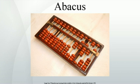The Salamis tablet is a slab of white marble 149 cm long, 75 cm wide, and 4.5 cm thick, on which are five groups of markings. In the center of the tablet is a set of five parallel lines equally divided by a vertical line, capped with a semicircle at the intersection of the bottom-most horizontal line and the single vertical line. Below these lines is a wide space with a horizontal crack dividing it. Below this crack is another group of eleven parallel lines, again divided into two sections by a perpendicular line, but with a semicircle at the top of the intersection. The third, sixth and ninth of these lines are marked with a cross where they intersect with the vertical line.